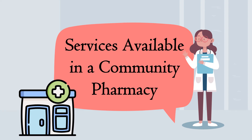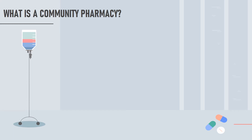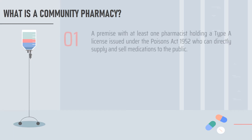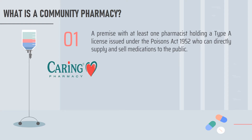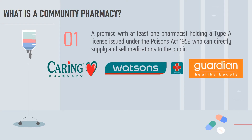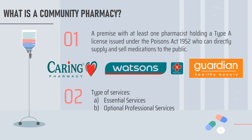Hi everyone. PharmaStudio is back now with a new topic which is the services available in a community pharmacy. Do you know what is a community pharmacy? A community pharmacy is generally a premise with at least one pharmacist holding a type A license issued under the Poisons Act 1952 who can directly supply and sell medications to the public. Some examples of community pharmacy are Caring Pharmacy, Watson's, and Guardian. The services are further categorized into two types which are essential services and optional professional services.